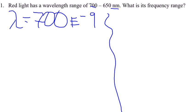And then you're going to have a separate problem where the wavelength is 650 times 10 to the negative 9th, or E negative 9.